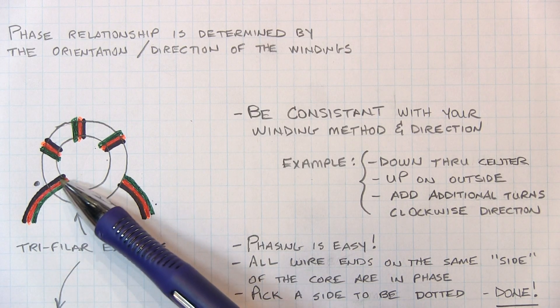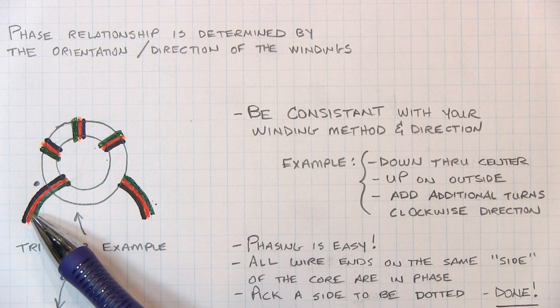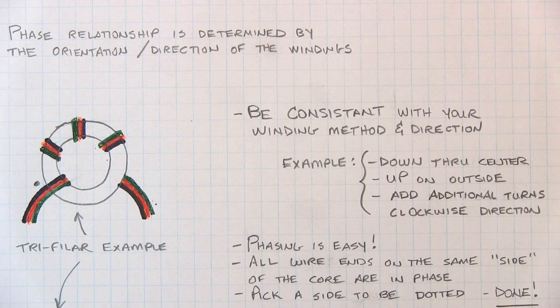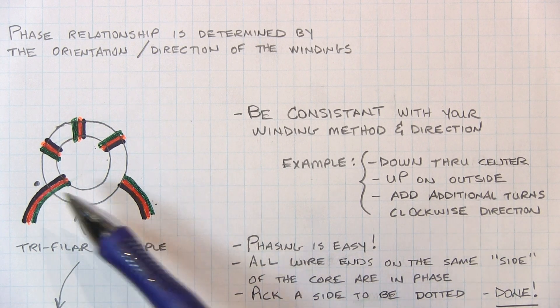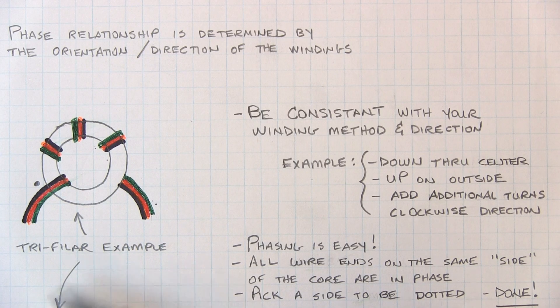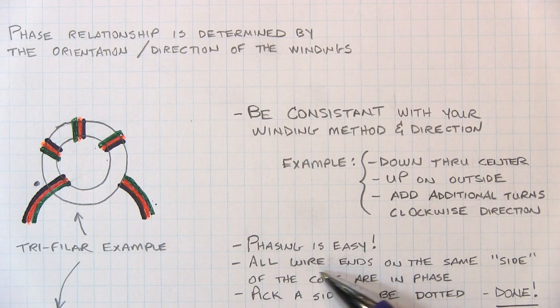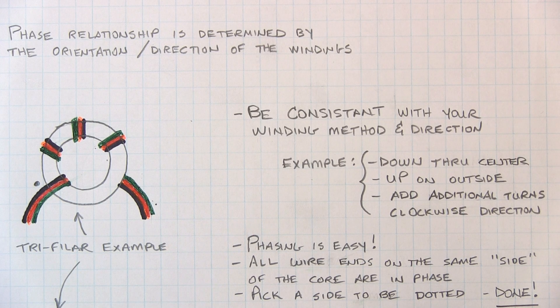Essentially, all of the wires that are coming in off of one side, like all of these that are going across the top and down, they're all going to be in the same phase. You could choose to put the dot on each of those windings, or you could choose to say I'm going to put the dot on all of these. But basically all the wire ends that are on the same side of the core are in phase. So very simple to take care of.